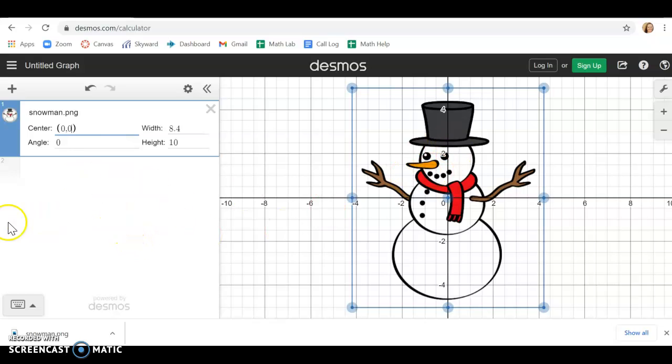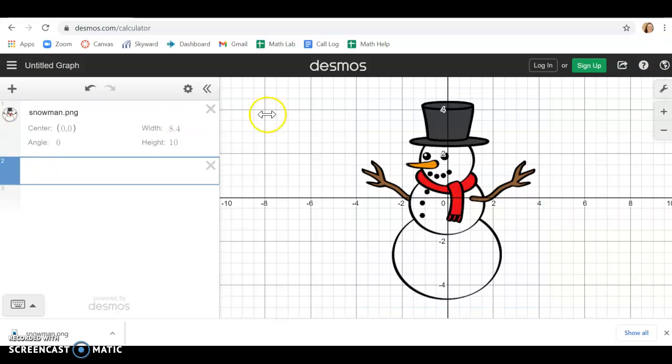Okay and then what I'm going to do is I'm just going to create and write equations that kind of trace the outline of my snowman. So for example I see that his scarf almost looks like it could be modeled by a quadratic equation. So I'm going to say okay what kind of quadratic equation am I going to need if I want to trace the outline of the scarf. I'll start with just the original x squared.